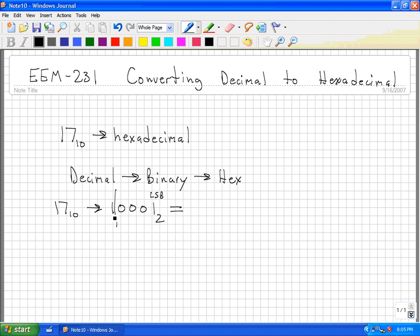Now we convert these 4-bit binary numbers into their hexadecimal equivalent. We start here with this 1. Since there's no other numbers, then we know that this 1 would be a hexadecimal 1. This is 0, 0, 0, 1, which would be 1 hexadecimal. So the number 17 decimal is equal to the number 1, 1 hexadecimal.